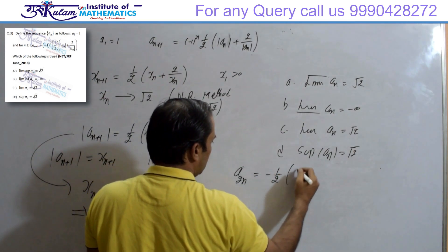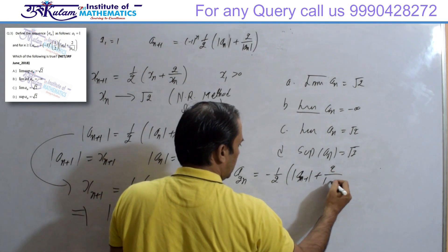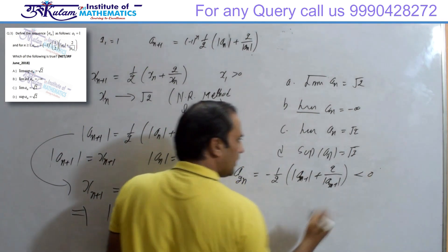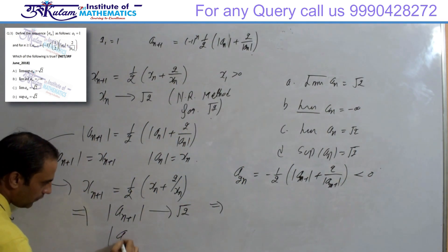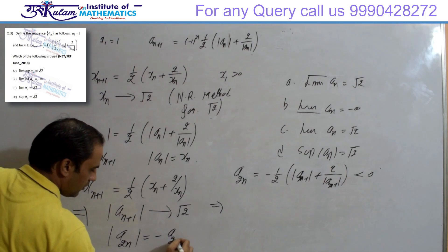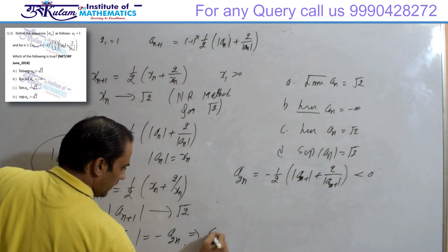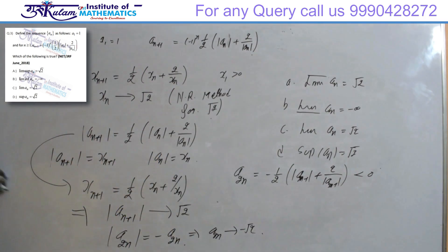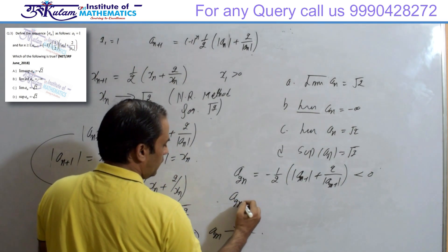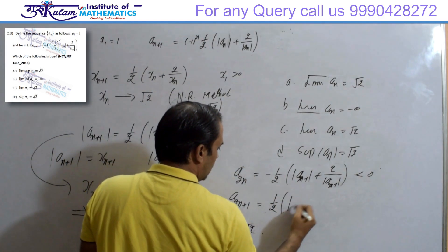So a_{2n} = -(1/2)(|a_{2n-1}| + 2/|a_{2n-1}|). This quantity inside is positive, but with the minus sign, a_{2n} is always negative. Therefore |a_{2n}| converges to √2, which implies a_{2n} converges to -√2. The even-indexed subsequence is always negative.